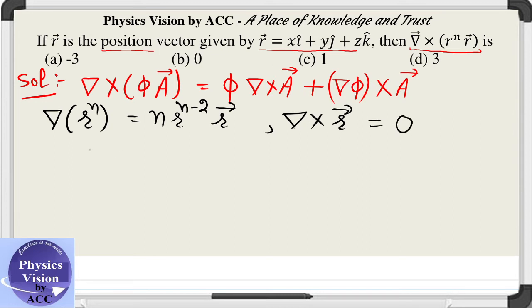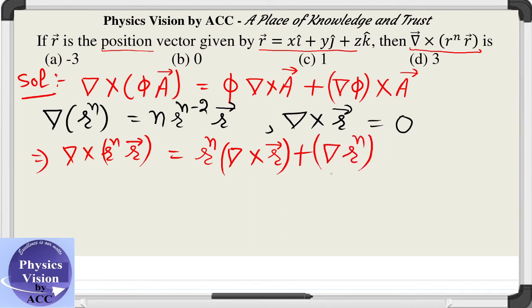Now we'll put the values and we'll get our results. What is the value we need to calculate? Del cross r to the power n times r vector. This must be equal to r to the power n times curl of r, plus gradient of r raised to the power n into r vector.